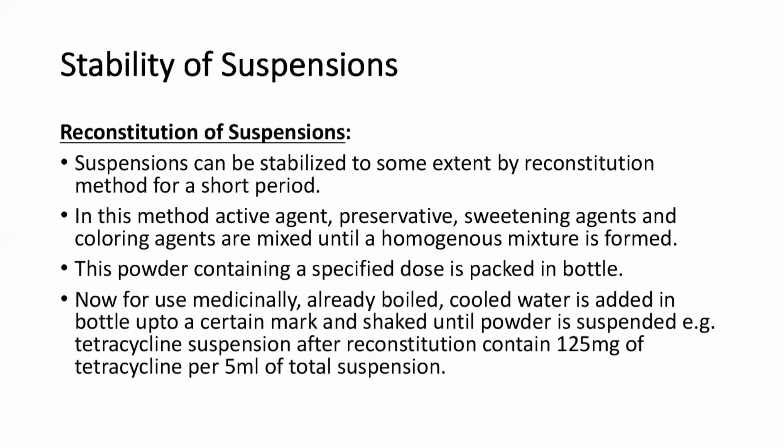Suspensions can be stabilized by a reconstitution method for a short period. In this method, the active agent, preservatives, sweetening agents, and coloring agents are mixed until a homogeneous mixture is formed. This powder containing a specified dose is packed in a bottle. Before use, previously boiled and cooled water is added to the bottle and shaken until the powder is suspended. For example, tetracycline suspension after reconstitution contains 125 mg of tetracycline per 5 ml.